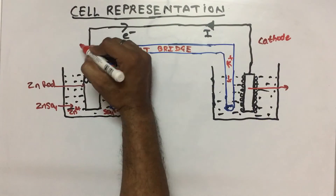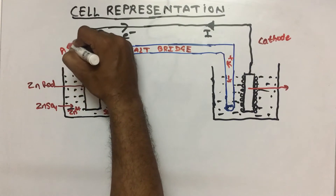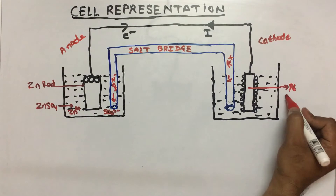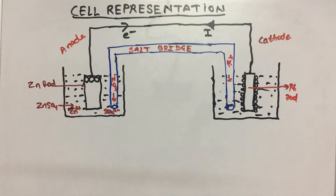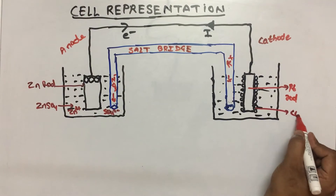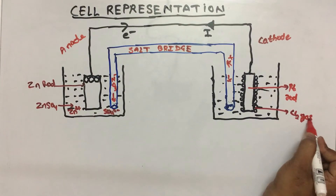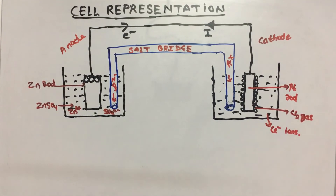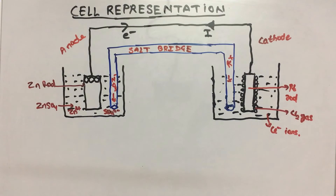On the right-hand side there is an anode and there is zinc. This is a platinum rod and on its surface there is chlorine gas, and there are chloride ions in the solution. The zinc rod is dipped in zinc sulfate, and the chlorine gas is in any of its salts like NaCl.